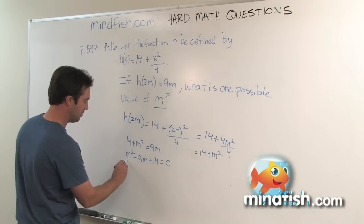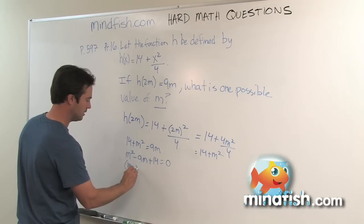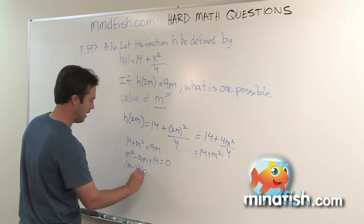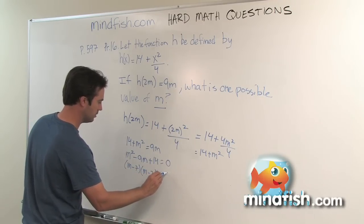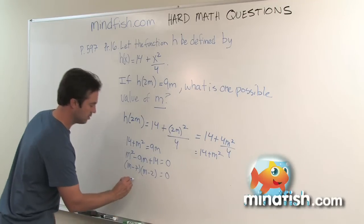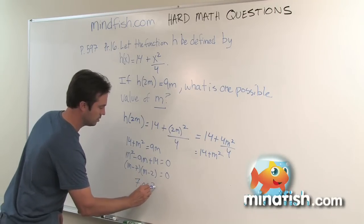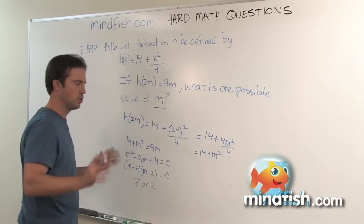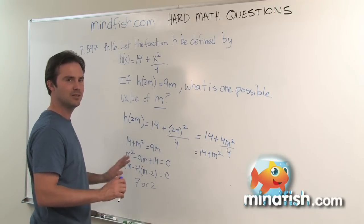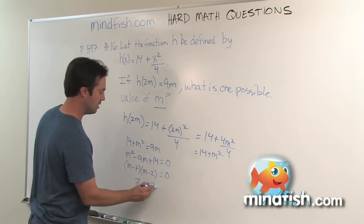And then I'm going to factor that. M minus 7, m minus 2 equals 0. And so my two solutions here would be either 7 or 2, either one. You could grid in either one. Don't grid them both in. It's not going to give you credit for 72 or 27, but either one.